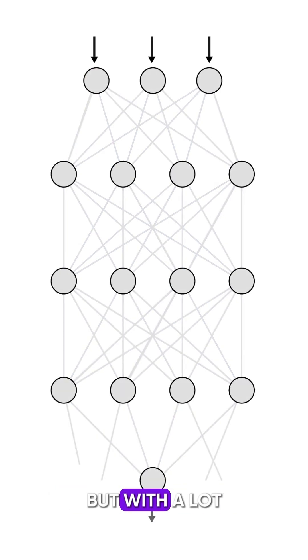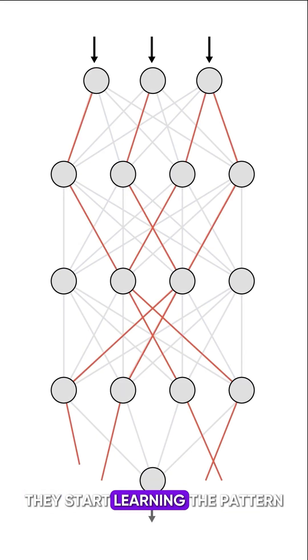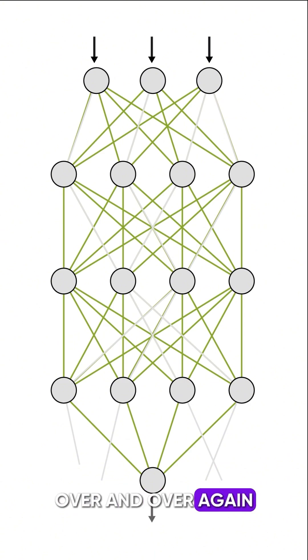At first, they might not get it, but with a lot of treats and praise, they start learning the pattern over and over again. This trains their neural network, making it smarter.